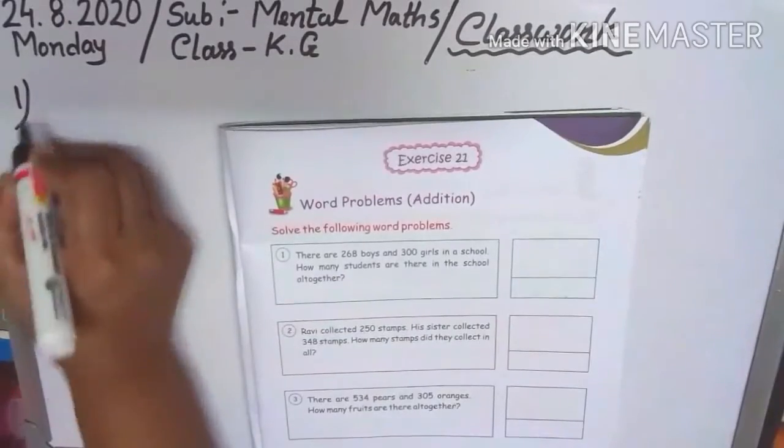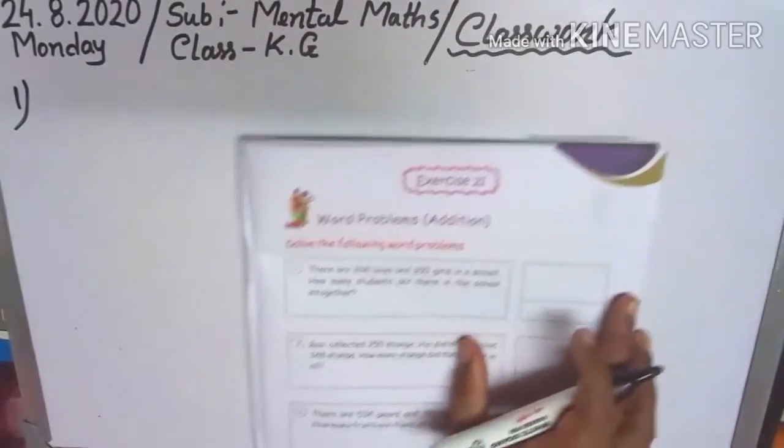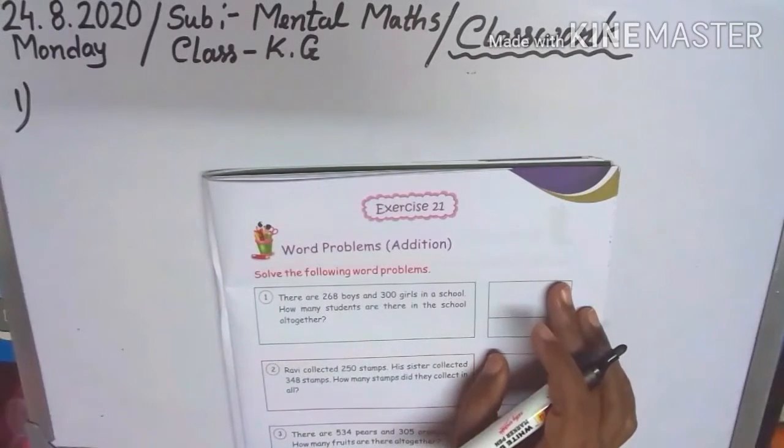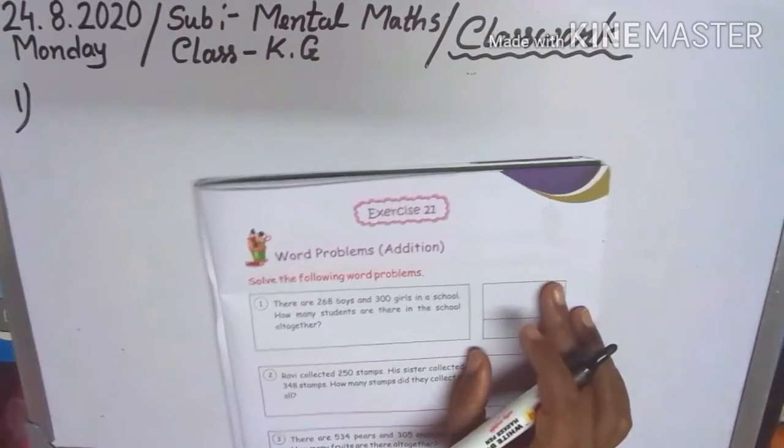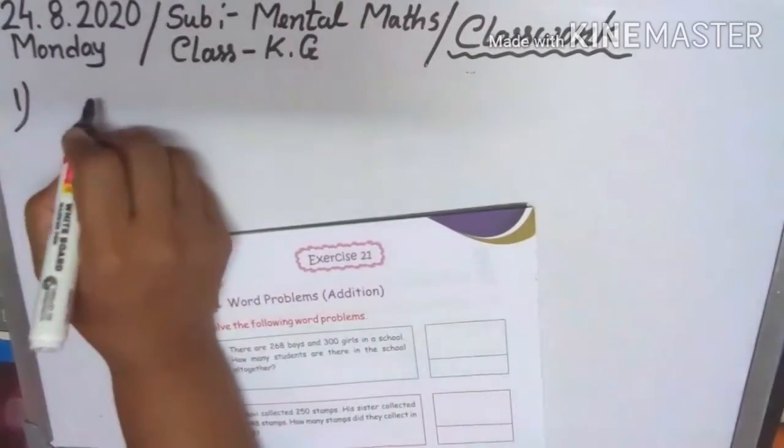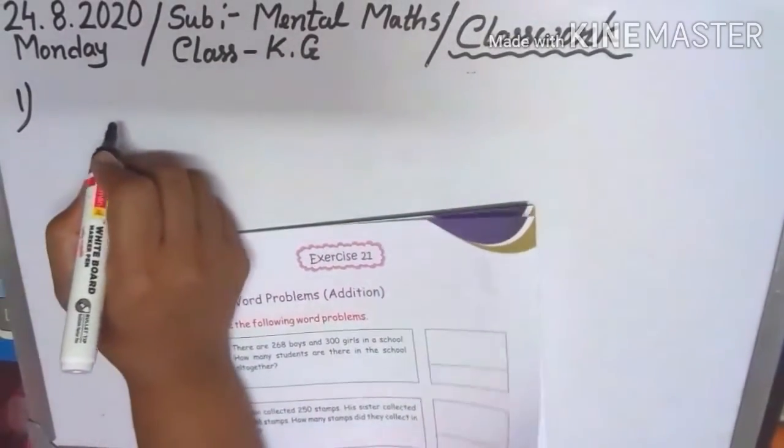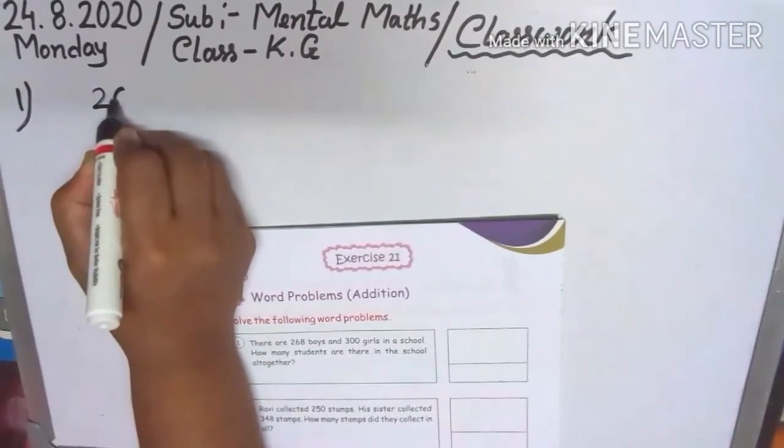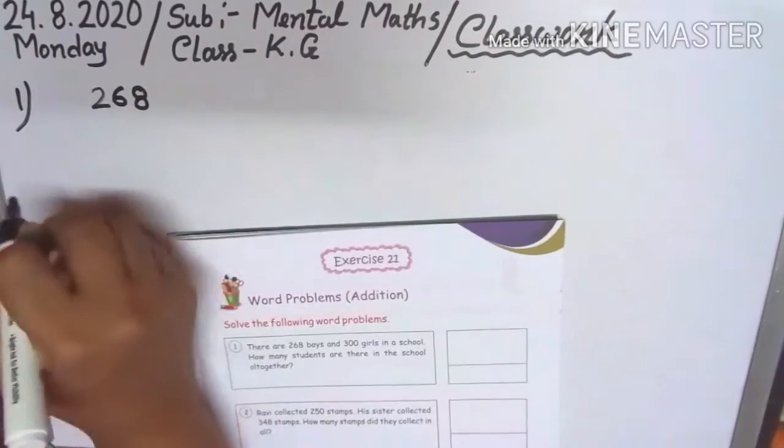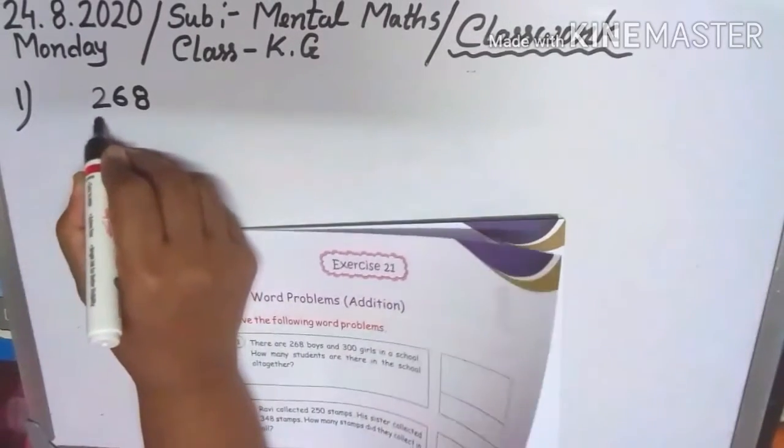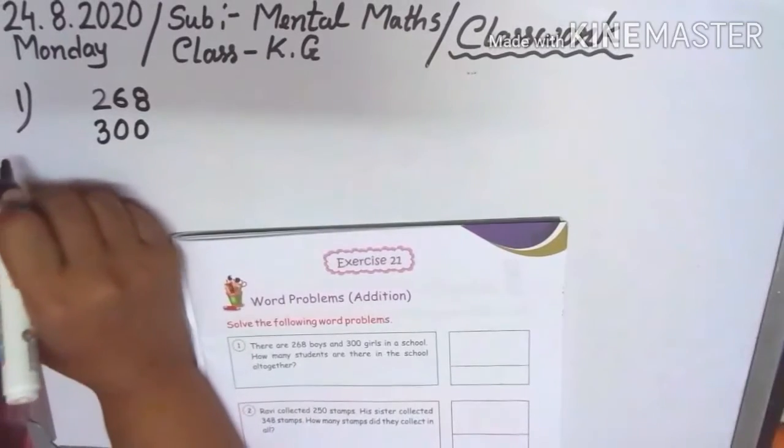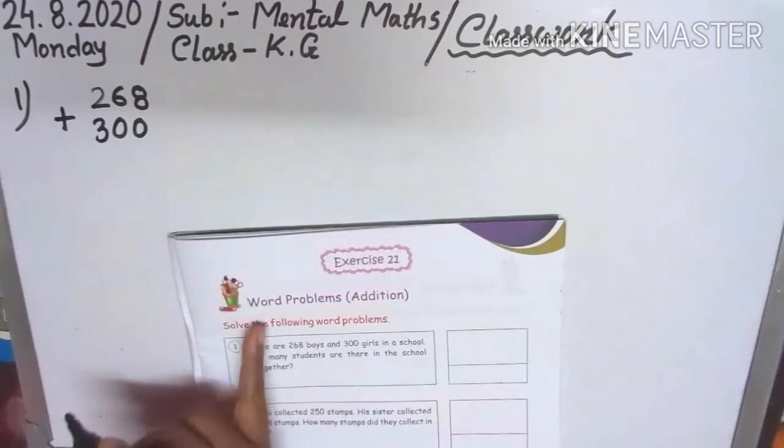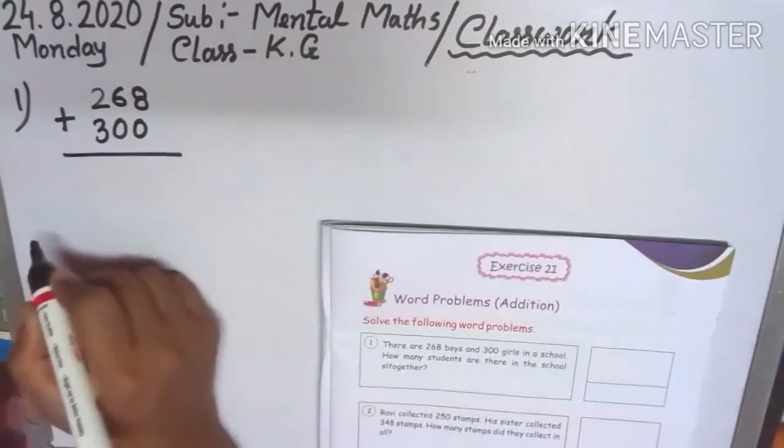Boys. First, boys 268 and girls 300. So this is addition, word problems addition.